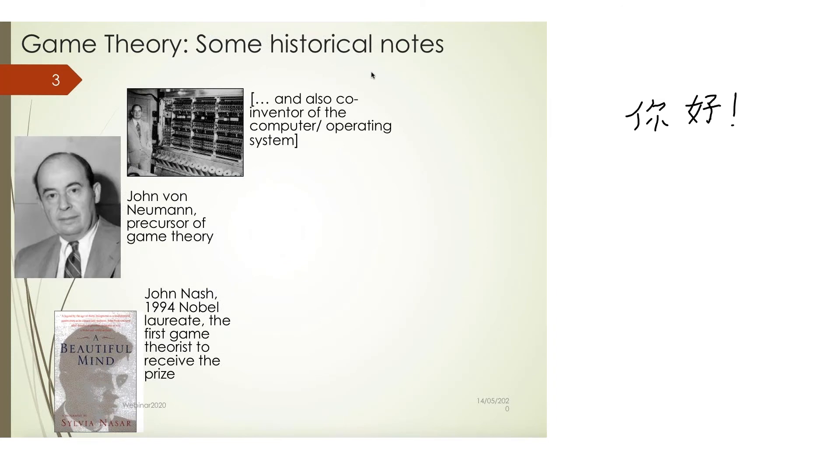But of course, it's not the only person. One of the precursors of game theory was actually John von Neumann. And as you can see, the picture of him is also, he was also the co-inventor of the computer operating system. And that little thing that you see in the picture is actually the first computer. And it's, if I remember correctly, it's on display in one of the libraries at Harvard universities. And of course, this is history.